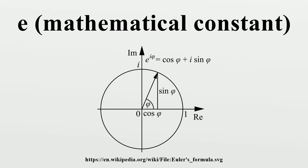The numerical value of e truncated to 50 decimal places is 2.71828182845904523536028747135266249775724709369995.